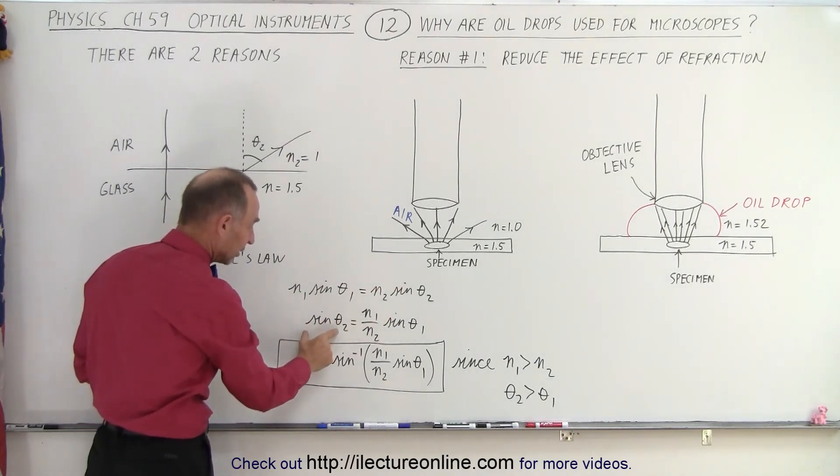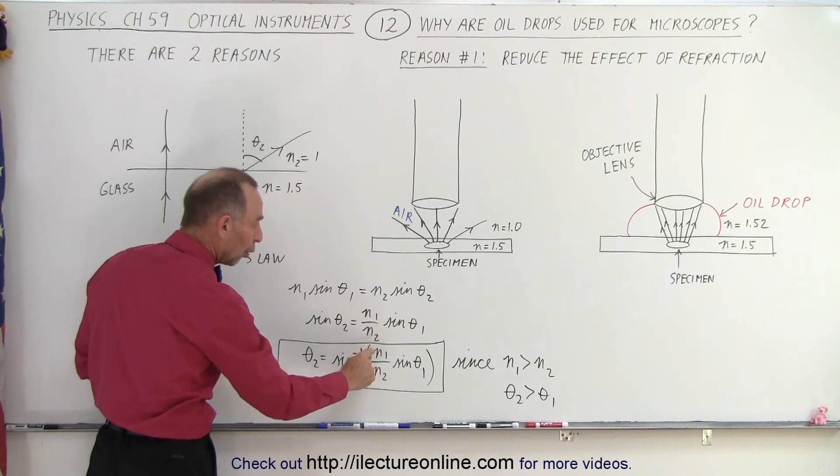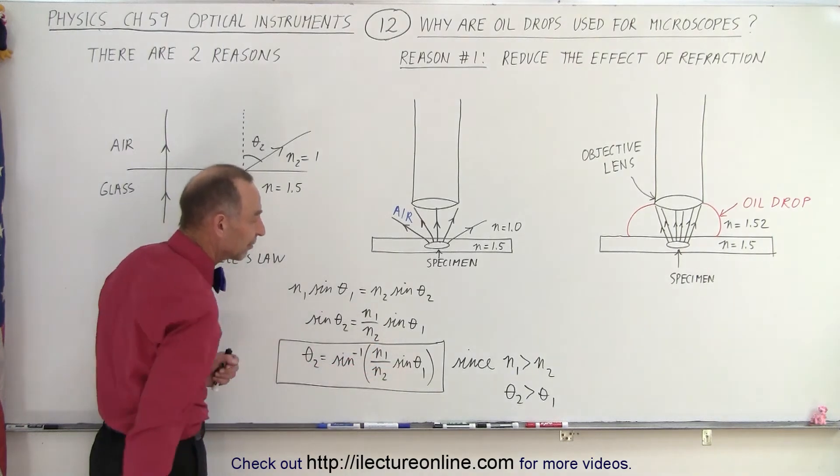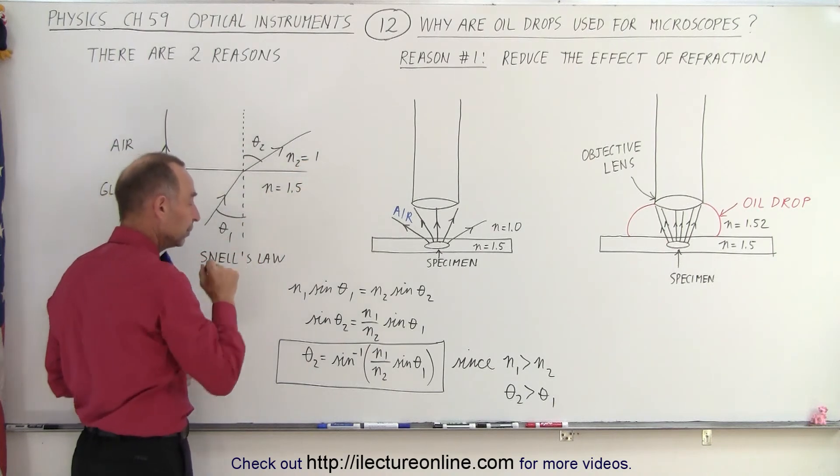If we then solve that equation for sine theta2 and then eventually for the angle itself, notice it's the inverse sine of n1 over n2 times the sine of theta1. Now in our case, n1 is smaller than n2.